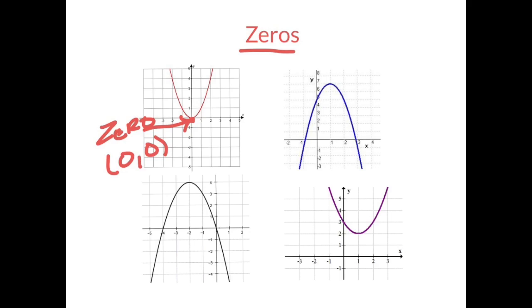Moving on to the next parabola, I notice that I have two zeros — here and here. Both of them are zeros. Same as in the parabola down here — I notice one, two. So here I have one zero, and here is my other zero.